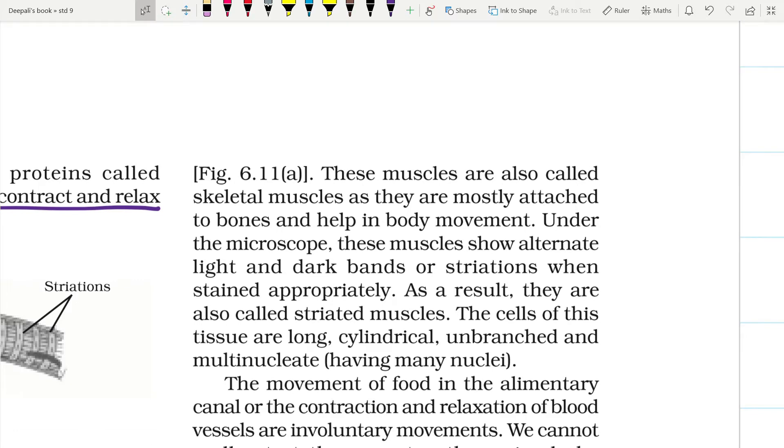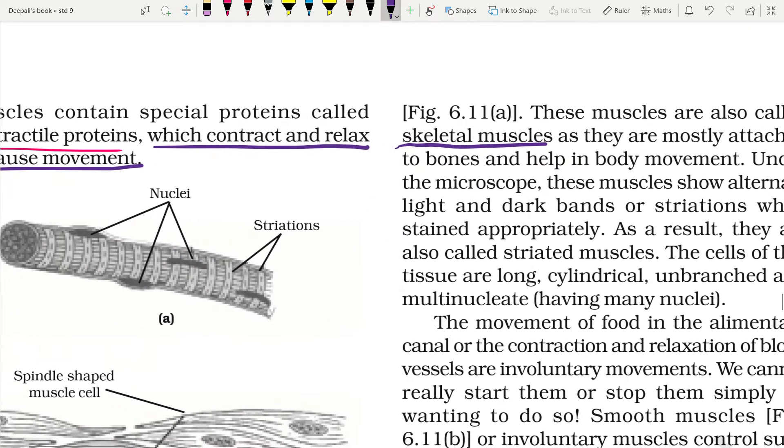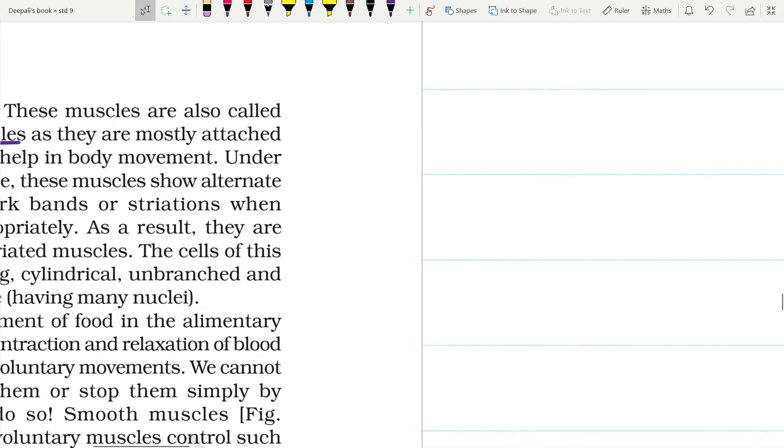These muscles are also called skeletal muscles as they are mostly attached to bones and help in body movement. Under the microscope, these muscles show alternate light or dark bands or striations when stained appropriately. You can see the bands in the given diagram. It is something like you see a dark patch or a dark band and a light band, again a dark band.